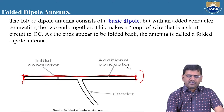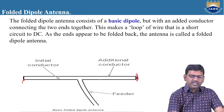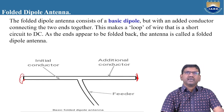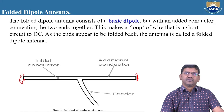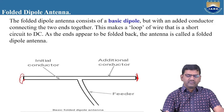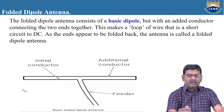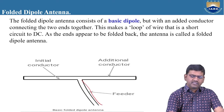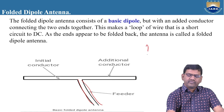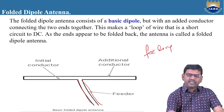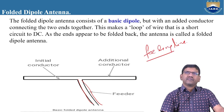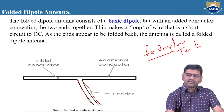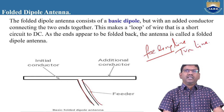The ends appear to be folded back, hence we call this antenna a folded dipole antenna. We also need to excite this antenna — that means we need to give some input signal to it. This is done through a feeding line, also known as a transmission line. We can also use a balanced transmission line to feed the folded dipole antenna.